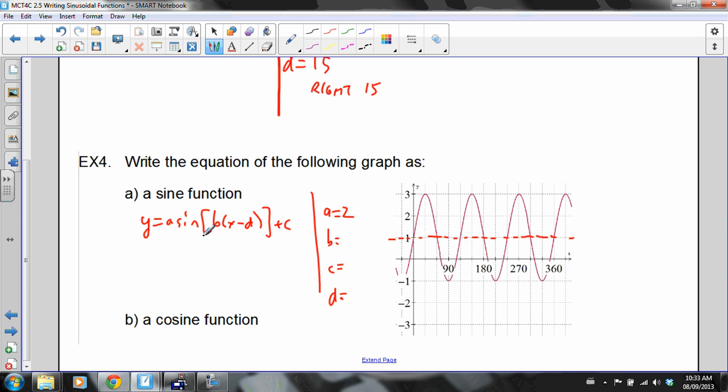The period. Well, the period is the B value. How often does it start copying itself? Well, it's from there to there, the graph starts copying itself. And that's 120 degrees, 30, 60, 90, 120.